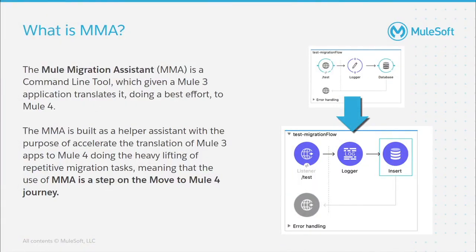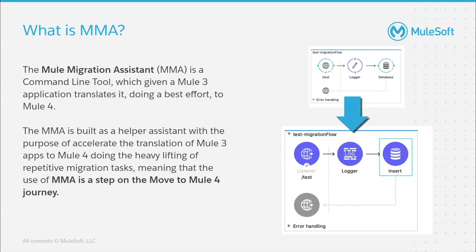The Mule Migration Assistant, which is often referred to as MMA, is MuleSoft's open source tool used to assist in the conversion process of Mule 3 applications to Mule 4 applications. The MMA tool is run from a command line, which will take a Mule 3 application as an input and output a Mule 4 application, along with a conversion report, which notes any of the errors that occurred during the conversion process.